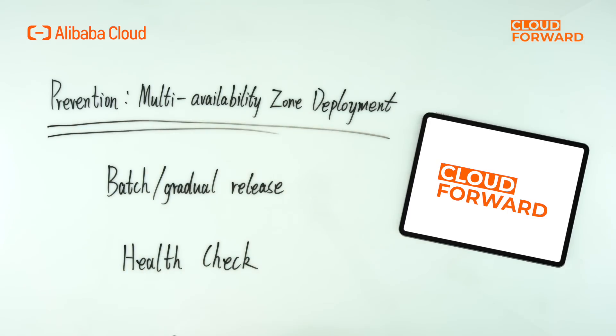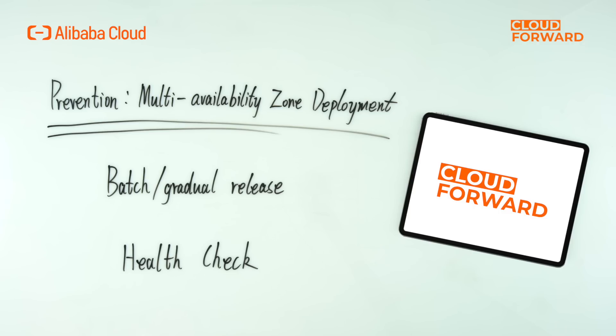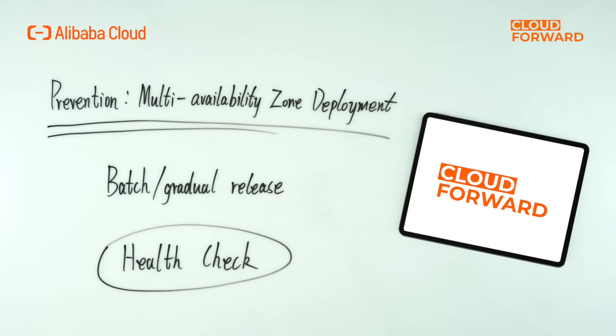First is prevention, and its value is beyond doubt. SAE adopts multi-availability zone deployment, which can effectively cope with data center-level failures. Batch gradual release starts with a small number of users for a new version release and gradually expands, rather than all at once, which can greatly reduce faults caused by releases.